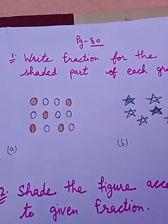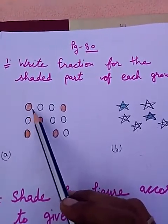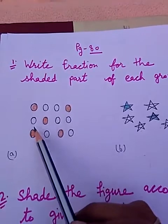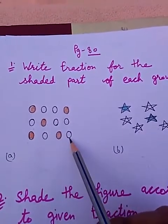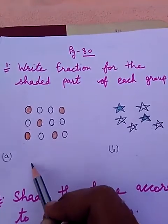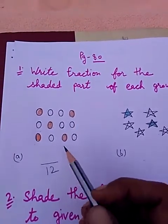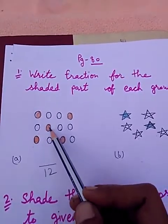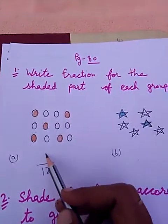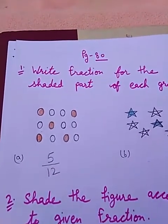Part A. Count how many equal parts are there? 1, 2, 3, 4, 5, 6, 7, 8, 9, 10, 11, 12. Total parts are 12, so we will write 12 in the denominator. Now count the shaded parts: 1, 2, 3, 4, 5. Shaded parts are 5 here. So we will write 5 in the numerator.